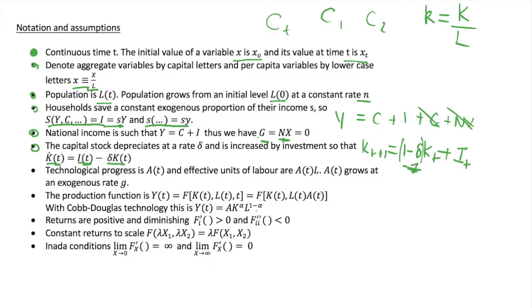The capital stock is reduced by depreciation and increased by investment. We also assume that we have technological progress captured in parameter a, so effective units of labour are defined by a multiplied by labour L. This productivity parameter a grows at an exogenous rate g.